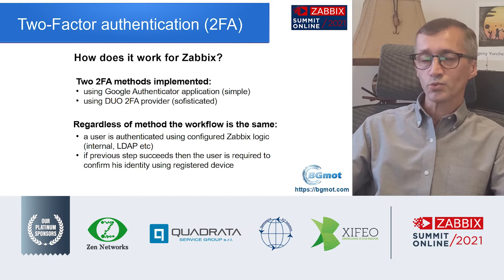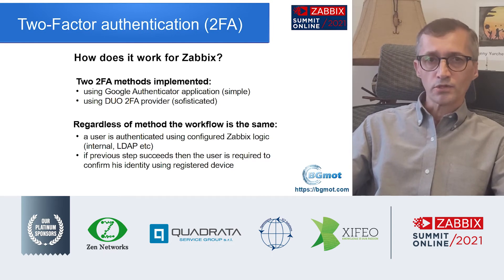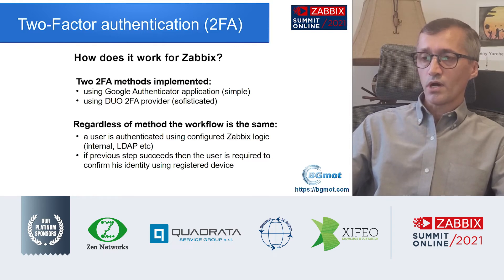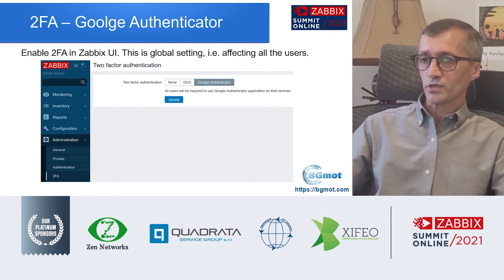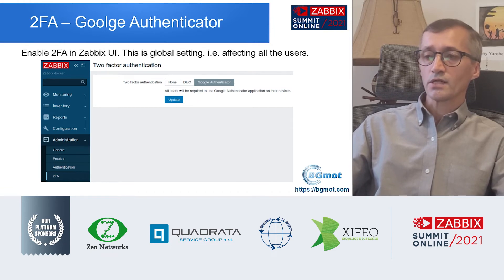Regardless of which option you choose, the principle and workflow are the same. First you are authenticated against the method configured for Zabbix — internal, LDAP, etc. — and then once authenticated using that method, 2FA kicks in. To use it: first we have to enable two-factor authentication in the Zabbix user interface. You go to Administration, then 2FA, and select Google Authenticator. Click Update. At this point 2FA is on.